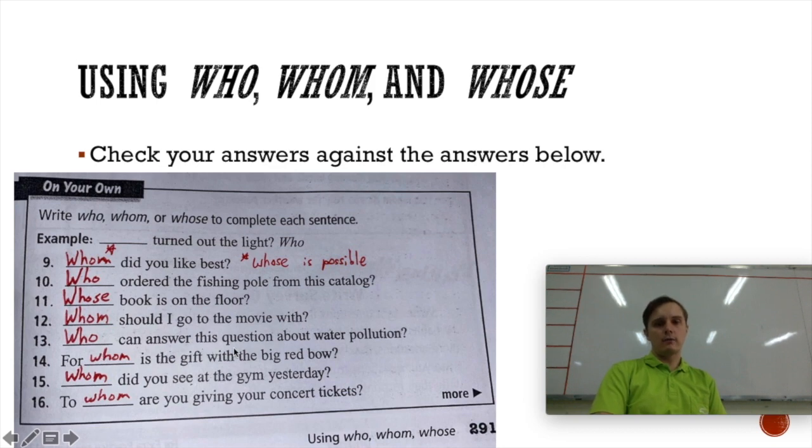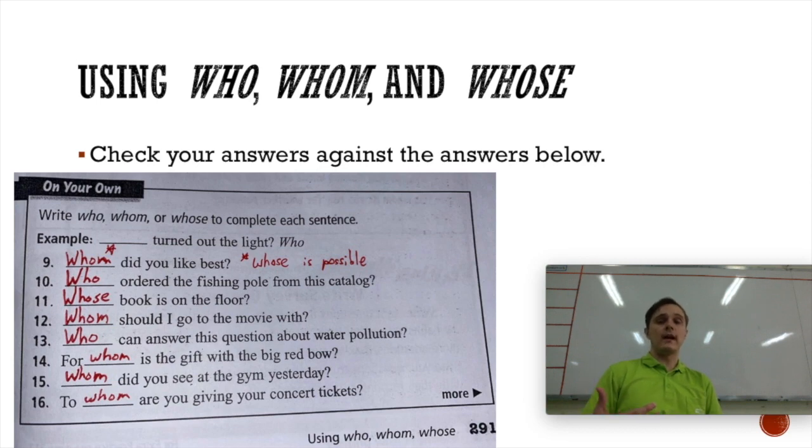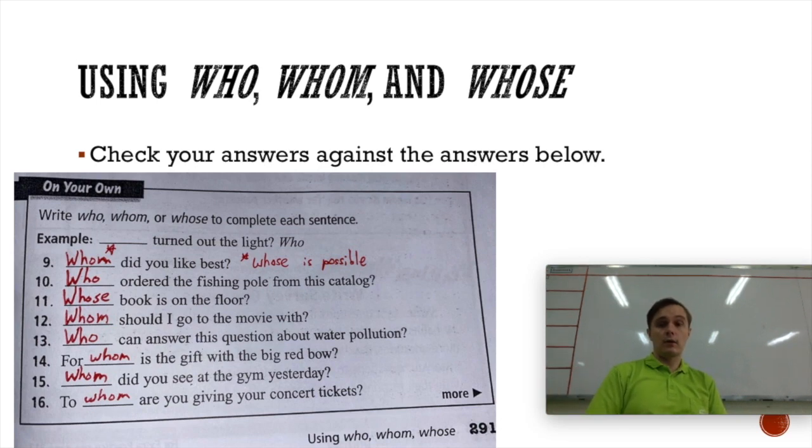Number 13. Who can answer this question about water pollution? We need a subject pronoun, because the answer would be, like, who can answer this question? Number 14. For whom is the gift with the big red bow? The fact that we've got for here makes it easier, because we always use an object pronoun after for. So, the gift with the big red bow is for Nene. Number 15. Whom did you see at the gym yesterday? If you answer that question, you would say, I saw Sky at the gym. So, I would be the subject, Sky would be the object. So, when we ask the question, we need the object pronoun whom. And number 16. To whom are you giving your concert tickets? Again, I am giving my concert tickets to Jing Jing. Okay. So, give yourself a score out of eight for that section.